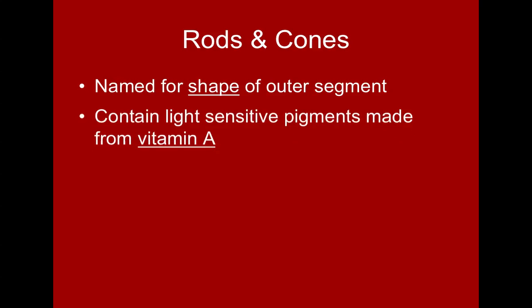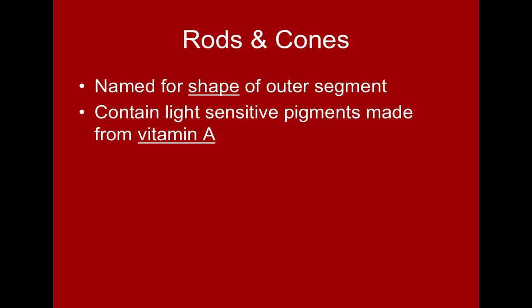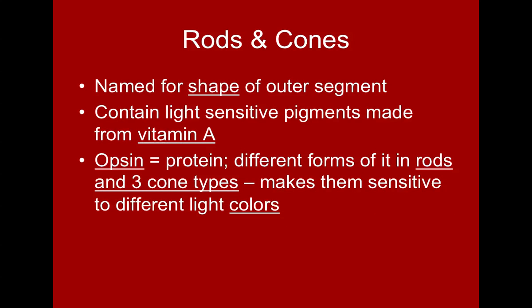Inside the rods and cones, they have a light-sensitive set of pigments made from vitamin A. One of the main pigments is called opsin — a protein found in different forms in the rods and each of the three cone types. Because each opsin protein in the different cones is sensitive to different light colors, it's the difference in that opsin protein that makes this possible.